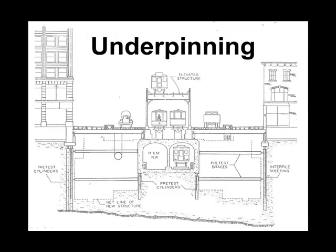Even if you're using the most advanced techniques for supporting excavation — such as secant pile walls and slurry walls — there is still a risk of some loss of material, and that can certainly jeopardize the adjoining structures. So a positive means of underpinning those structures must be considered.